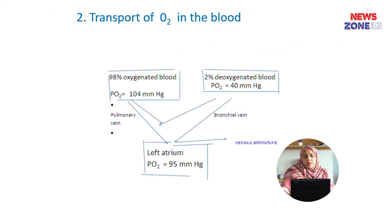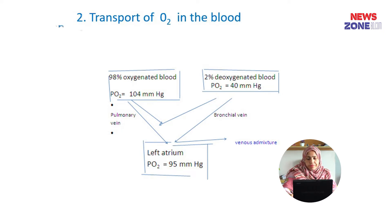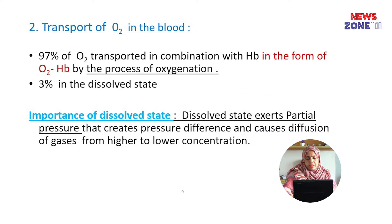Number 2, the transport of oxygen in the blood. Partial pressure of oxygen at the venous end is 104 mmHg; here 98% of blood is oxygenated. Partial pressure of oxygen at the arterial end is 40 mmHg; here 2% of blood is deoxygenated blood. Due to venous admixture, the partial pressure of oxygen is reduced in the tissue capillary, which is 95 mmHg.